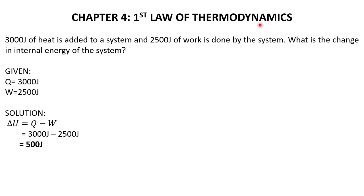For our second problem, 3,000 joules of heat is added to a system and 2,500 joules of work is done by the system. What is the change in internal energy of the system? Given: Q equals 3,000 joules and W equals 2,500 joules.